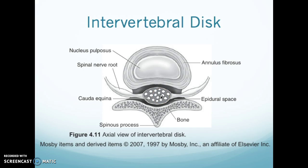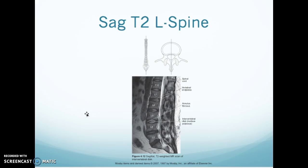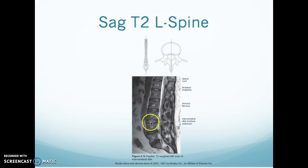Here is your epidural space with your bone. The cauda equina is just the nerves free-floating within the CSF. Coming out you have your nerve root, and any kind of impingement is what you feel as shooting pain down your legs. On sagittal T2 of the lumbar spine, you can see your cord coming down to where the spinal cord ends, and then this is your cauda equina. Here's T12, L1 through L5, then into your sacrum. The black part is your annulus fibers.